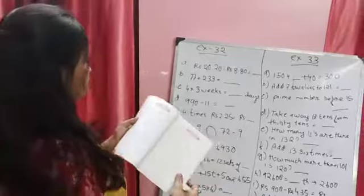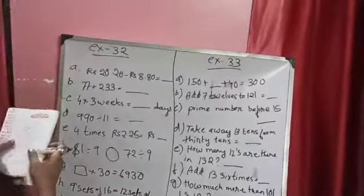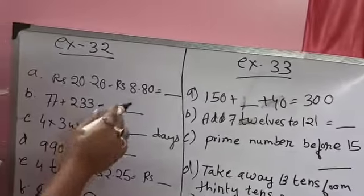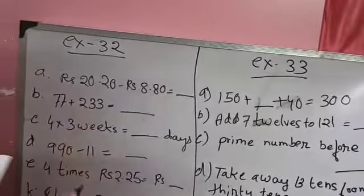So the first sum is given, that is Rs 20.20, that is 20 rupees 20 paisa minus Rs 8.80. So you do the calculations. Do it over here.